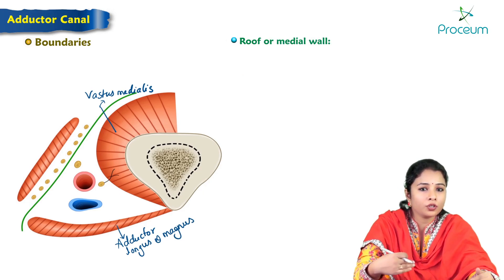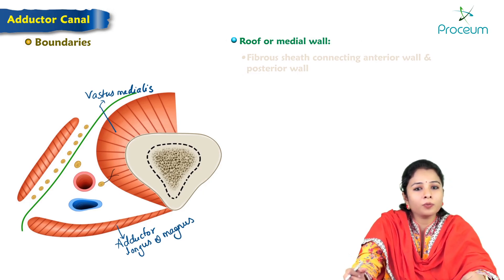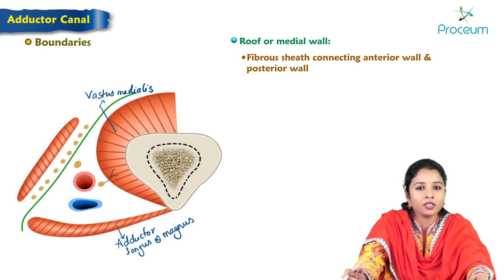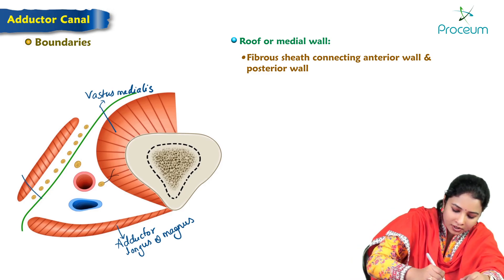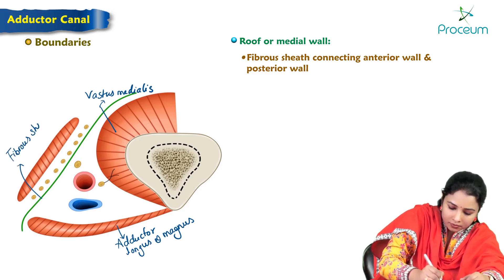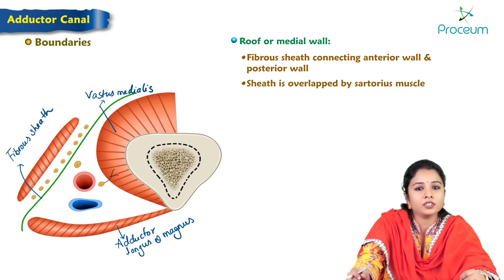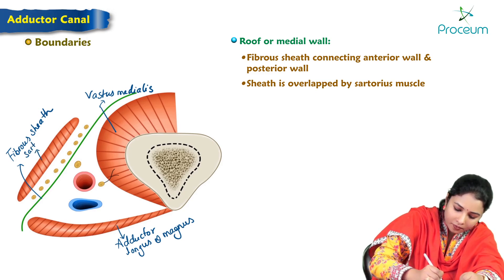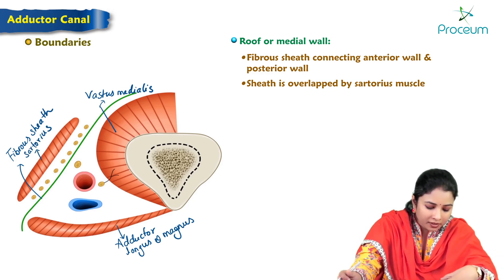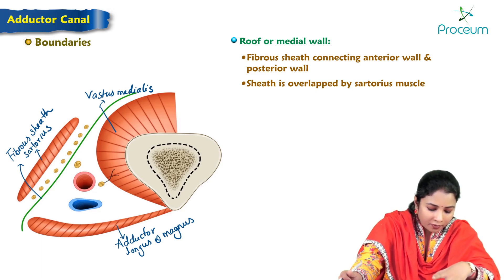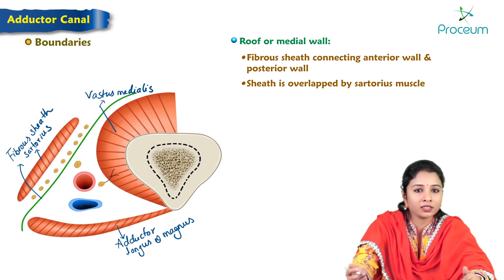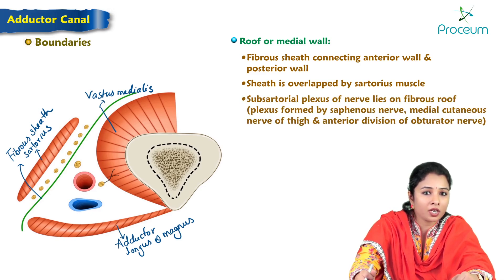The roof or medial wall is formed by a fibrous sheath connecting the anterior wall and the posterior wall. The sheath is overlapped by the sartorius muscle. Just beneath the sartorius, between the fibrous sheath and the sartorius, we can see a plexus of nerves called the subsartorial plexus.